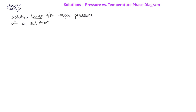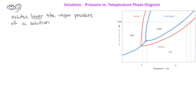In a previous video, we saw that solutes lower the vapor pressure of a solution. We can see this on a phase diagram — this takes place at all temperatures. The blue line represents the solid-to-liquid, liquid-to-gas, or solid-to-gas phase transitions at a given temperature for the pure solvent, whereas the red line indicates the same transitions for a solution.